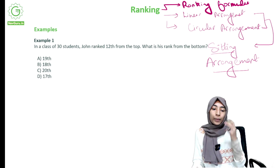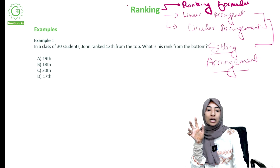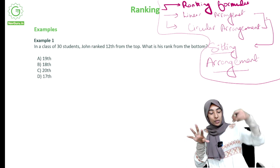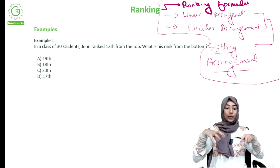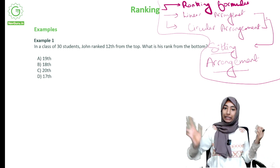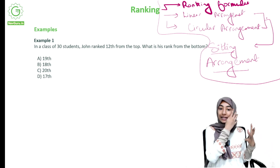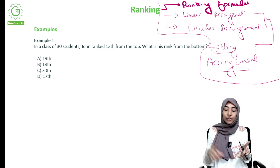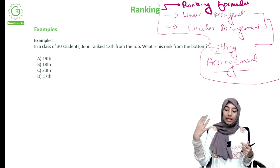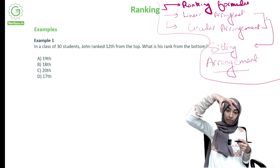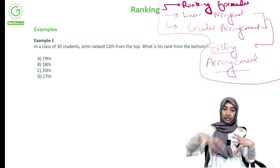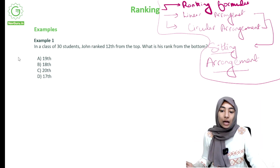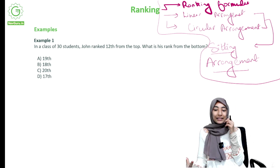So looking at the chapter from a bird's eye view — basically after you're done with the chapter, you look at it from the top. That really helps with your understanding and also when you get questions, you can easily classify them. So ranking has three things: ranking formulae, linear arrangement, and circular arrangement. That's all ranking is about.